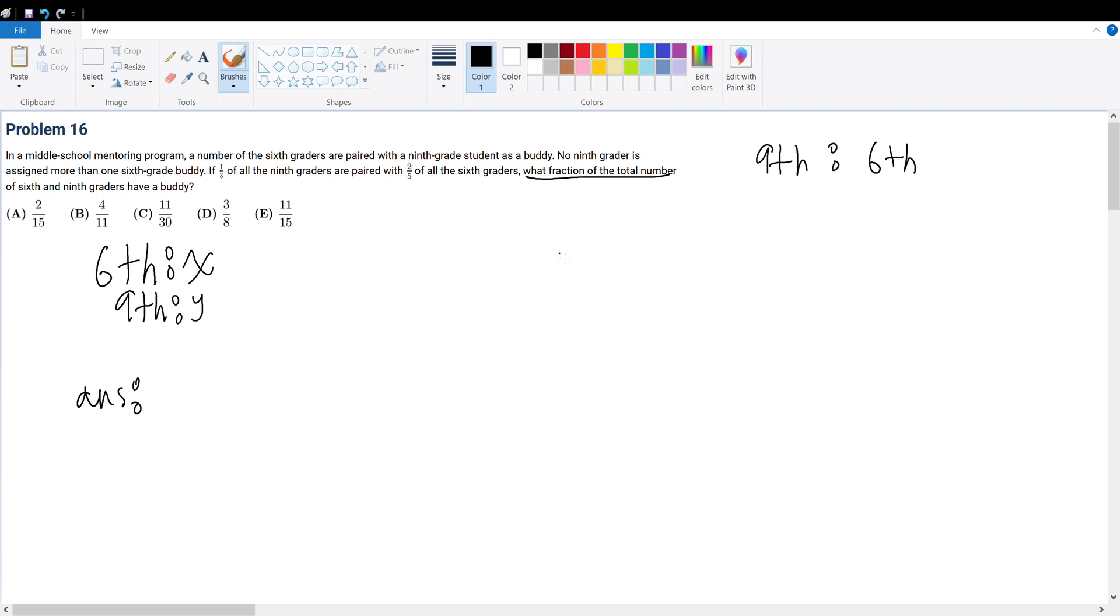Well, what is the fraction of 6th graders that have a buddy? Well, that's 2/5. So 2/5 of x. So it's 2/5x plus what is the fraction of 9th graders that have a buddy? Well, that's 1/3y. This divided by x + y would give me our answer.